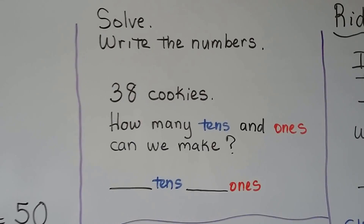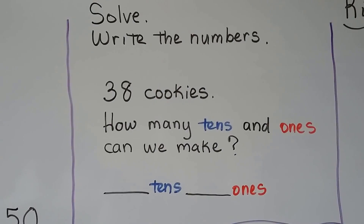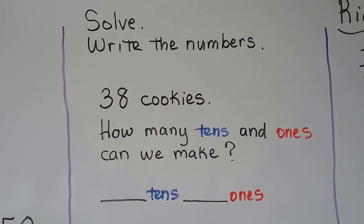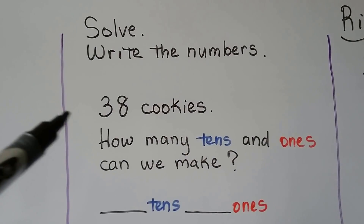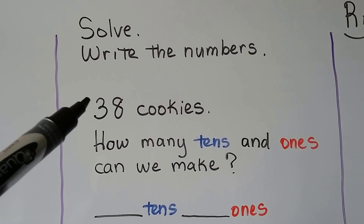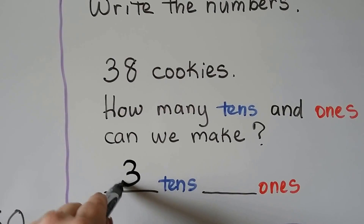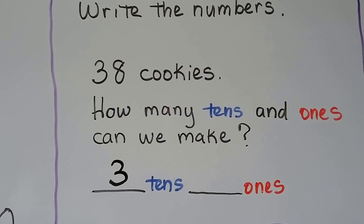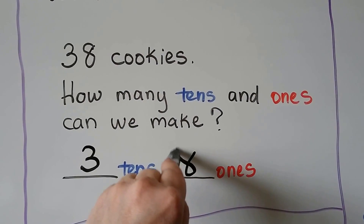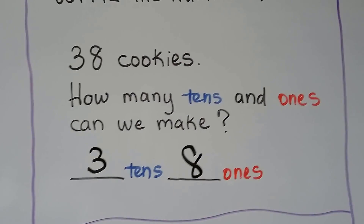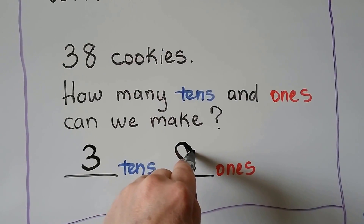Solve and write the numbers. There are 38 cookies. How many tens and ones can we make? What number is in the tens place? If you said three, you're right. And what number is in the ones place? An eight. We can make three tens and eight ones.